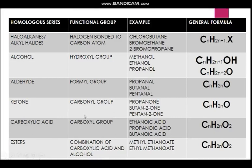Then we have carboxylic acid, whose functional group is the carboxyl group - you can get that from the name carboxylic acid. Examples are ethanoic acid, propanoic acid, and butanoic acid. The general formula is CnH2nO2, which should not be confused with the aldehyde or ketone general formula - this one has two oxygen atoms, so pay attention to that.